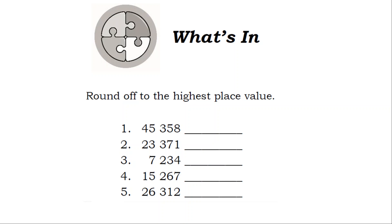1. 45,358 rounded off will be 50,000. 2. 23,371 rounded off will be 20,000.